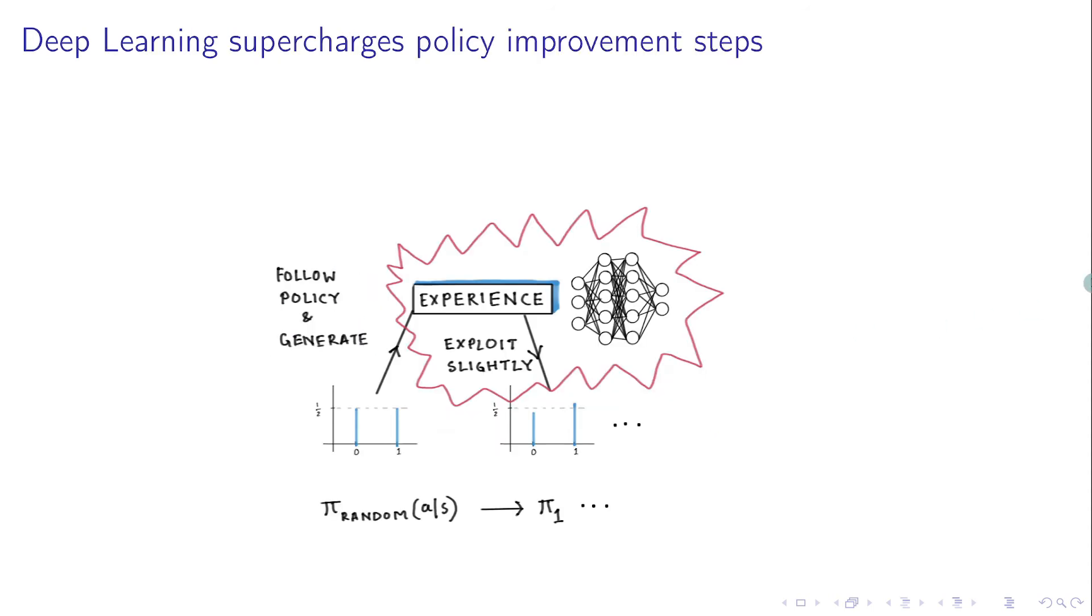In this manner, deep learning can supercharge this part of policy improvement. So for example, we can improve the policy of a state, let's say this one, which we haven't yet visited, as long as the state is similar to some state that we have visited before.